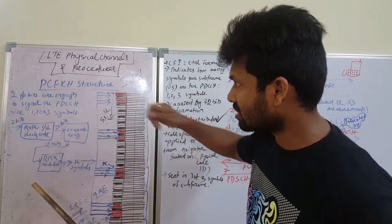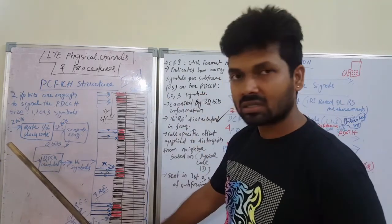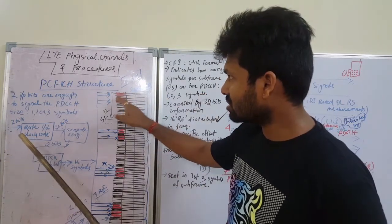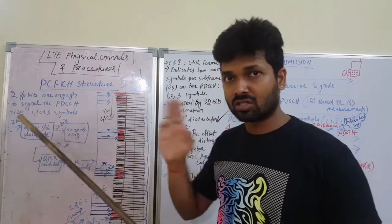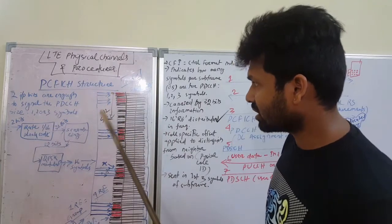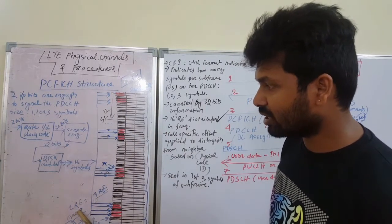72 subcarriers in the frequency domain. Each subcarrier is 15 kHz and this is transmitted in the first three symbols. So there are 16 resource elements or 4 resource element groups.